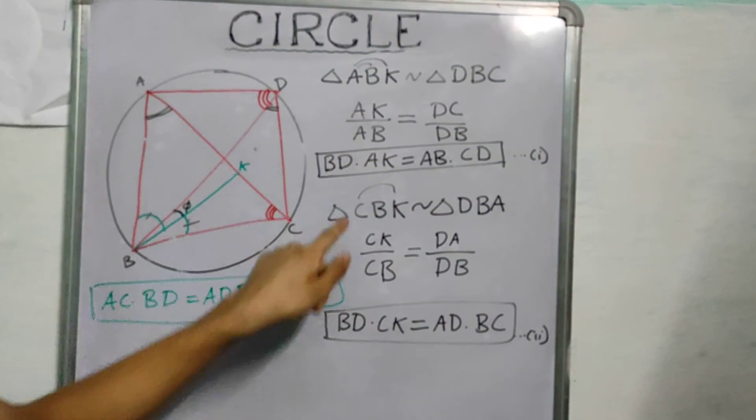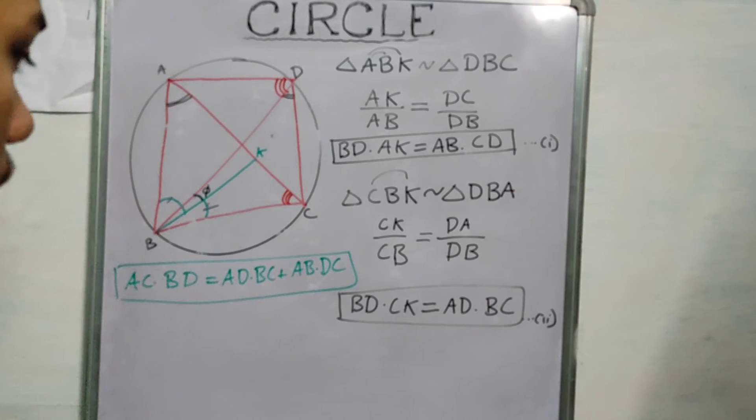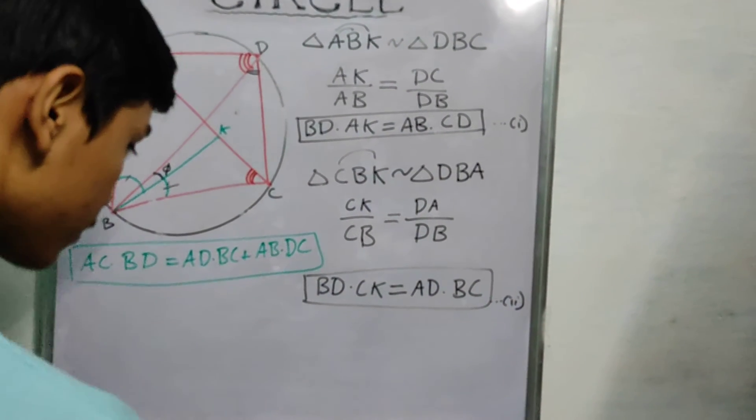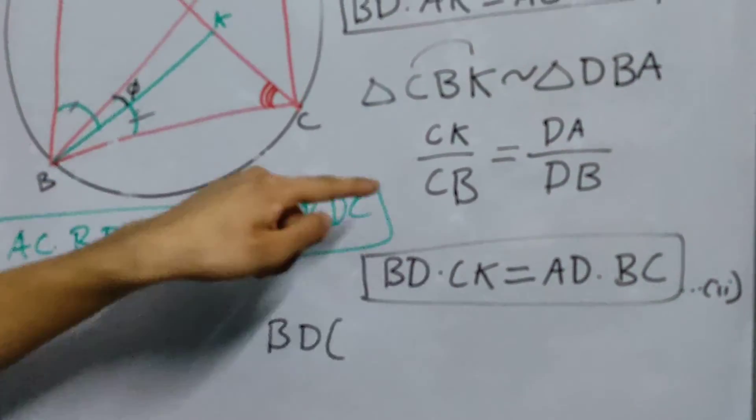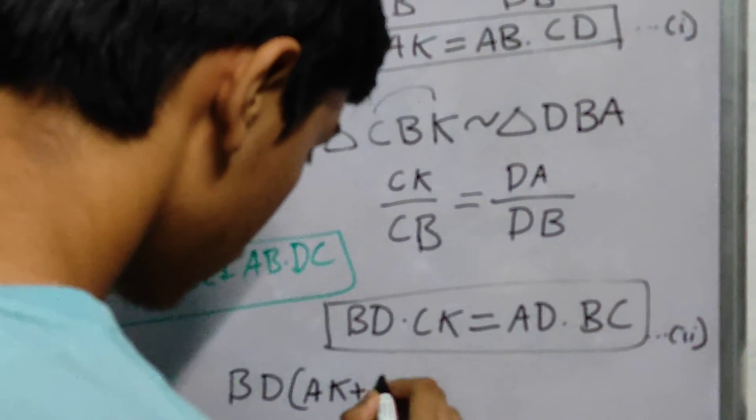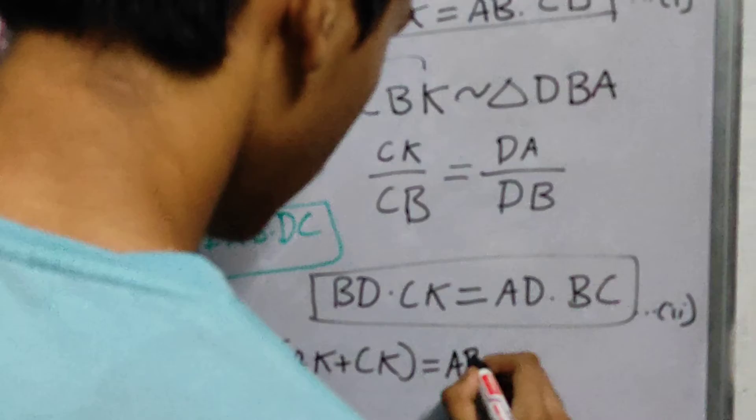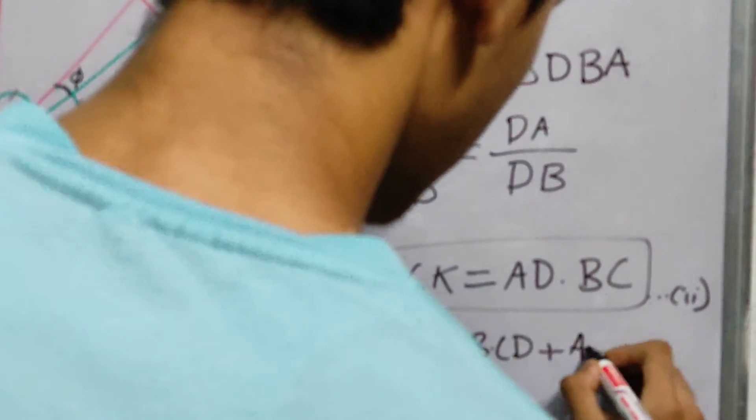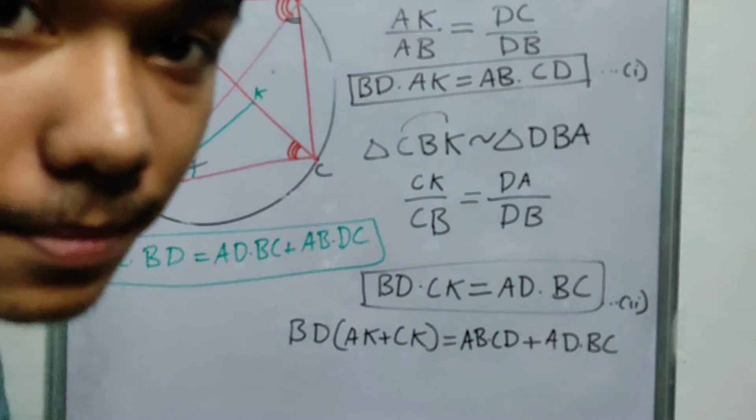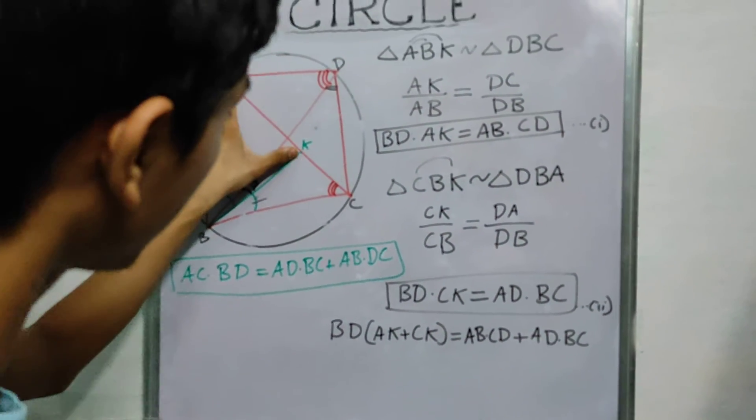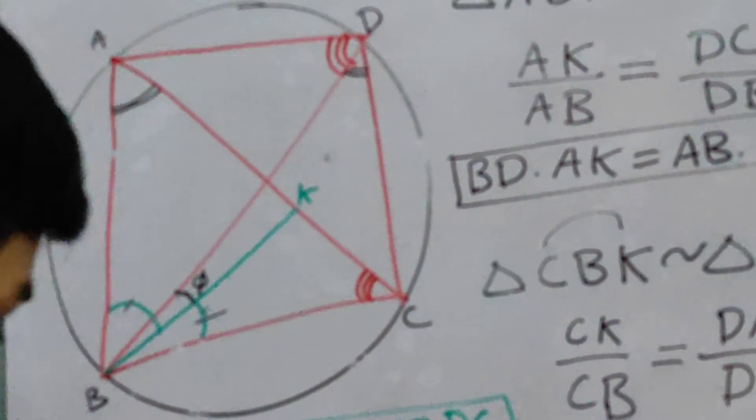That's the important thing. And we are done. We just add these two equations. So we add 1 and 2. So what will we get? BD will be common, so we take BD out. BD times AK plus CK will be equal to these two sums. So AB into CD plus AD into BC. And what is AK plus CK? This is AK, this is CK. So AK plus CK is nothing but AC. So from this we can understand.